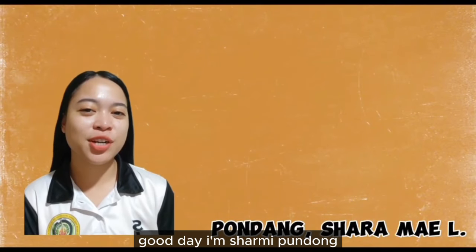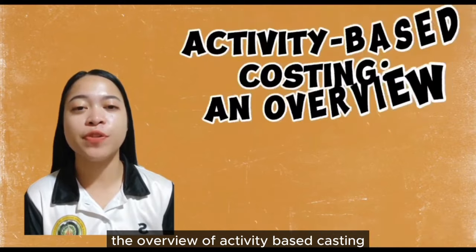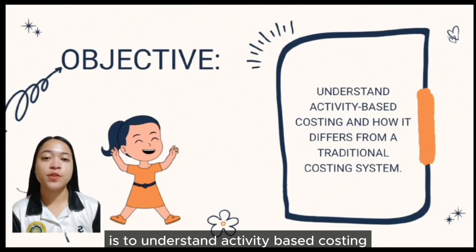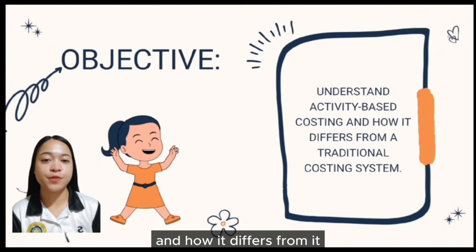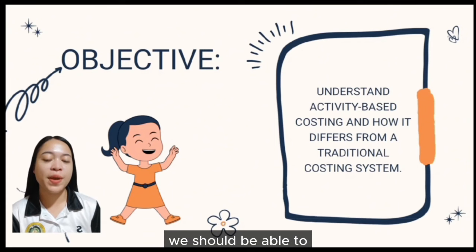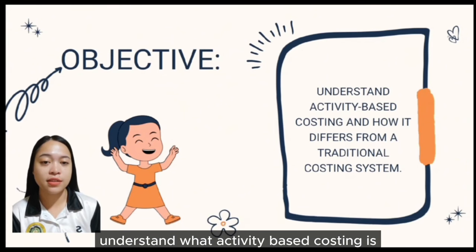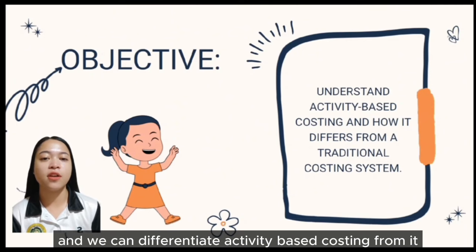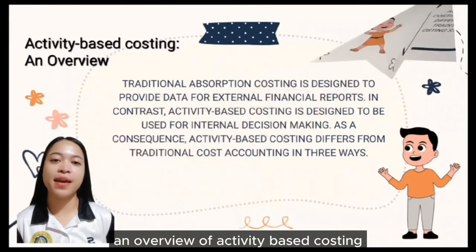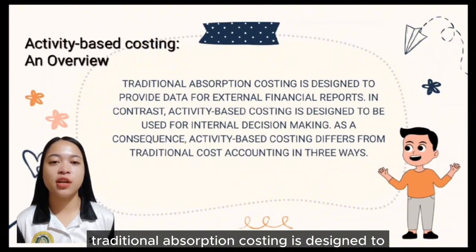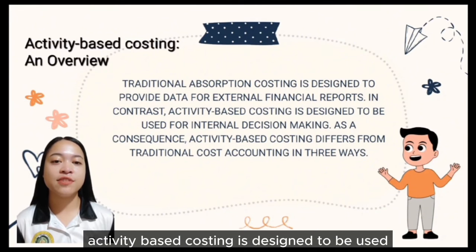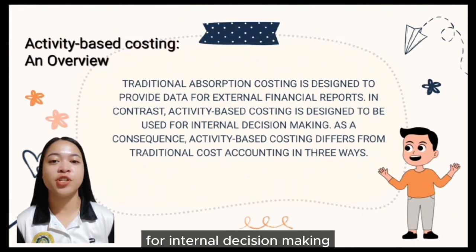Good day! I'm Charamie Pundang and I'm going to talk about the overview of Activity-Based Costing. The first learning objective of this chapter is to understand Activity-Based Costing and how it differs from a traditional costing system. Traditional absorption costing is designed to provide data for external financial reports, while Activity-Based Costing is designed to be used for internal decision-making.